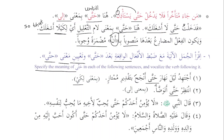The hadith: 'La yu'minu ahadukum hatta yuhibba li-akhihi ma yuhibbu li-nafsihi' — no one can be a true believer until he likes for his brother whatever he likes for himself. And: 'La yu'minu ahadukum hatta akuna ahabba ilayhi min walidihi wa walidihi wa al-nasi ajma'in' — no one can be a true believer until I become more beloved to him than his father, his son, and all the people in the world. Here hatta means 'until' (ila).